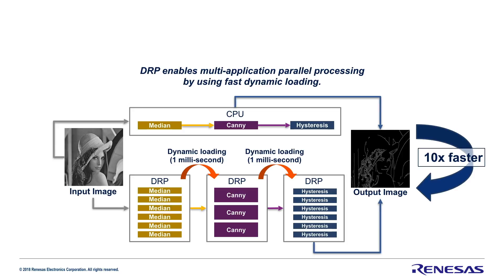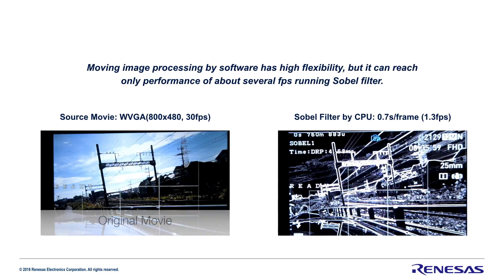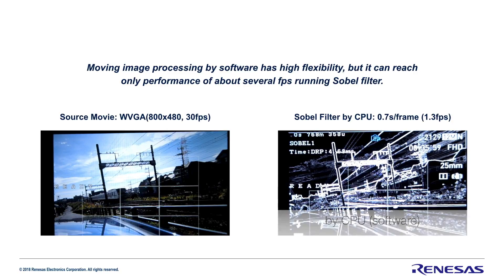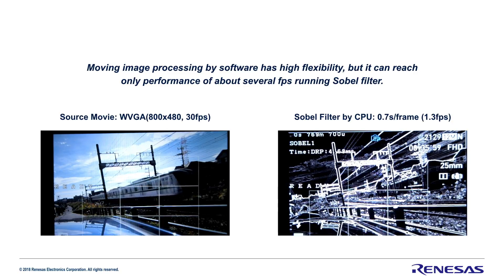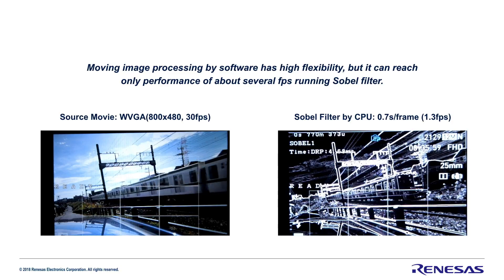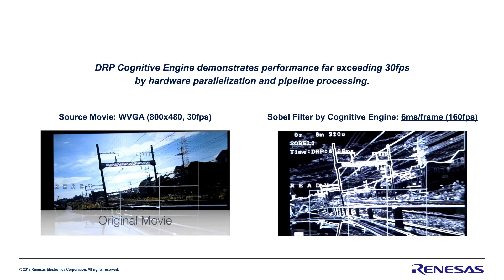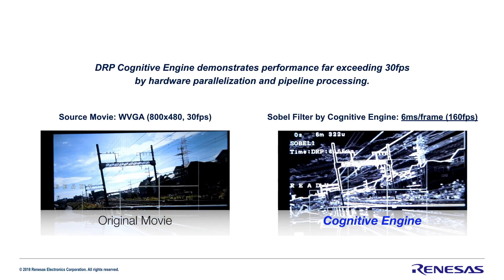Let's look at real-life examples. We have a video stream of an incoming train and we run a Sobel filter in software. The software running on the CPU can only manage 1.3 frames per second, so the performance does not meet our expectation at all. If we run the Sobel filter on the DRP, we achieve 160 frames per second, and now we are very happy about the result.